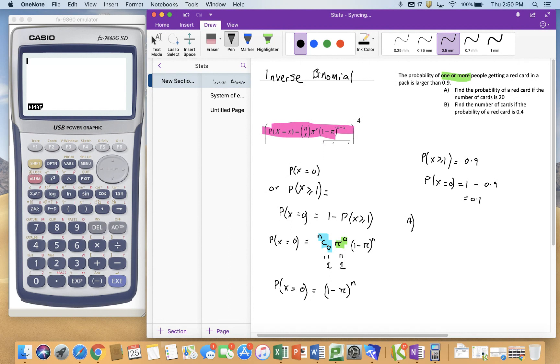So in my first situation, I want to find the probability of a red card if the number of cards is 20. So I know that 0.1 is equal to 1 minus the probability of a red card to the power of 20.